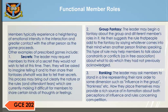Other examples of prescribed games include: 1. Secrets. The leader may request members to think of a secret they would not wish to tell at that time. Then they will be asked to imagine telling it and to share their fantasies of what it was like to tell their secrets. This process may bring up clearly the nature of the rules and attendant fears which are currently making it difficult for members to share certain kinds of thoughts or feelings. 2. Group fantasy. The leader may begin a fantasy about the group and different members' roles in it, then suggest the rule that people add to the fantasy by saying whatever comes into their minds when another person finishes speaking. This type of rule may help members to talk about constraints or conflicts — as in free association — about what to do, which they have not previously acknowledged.